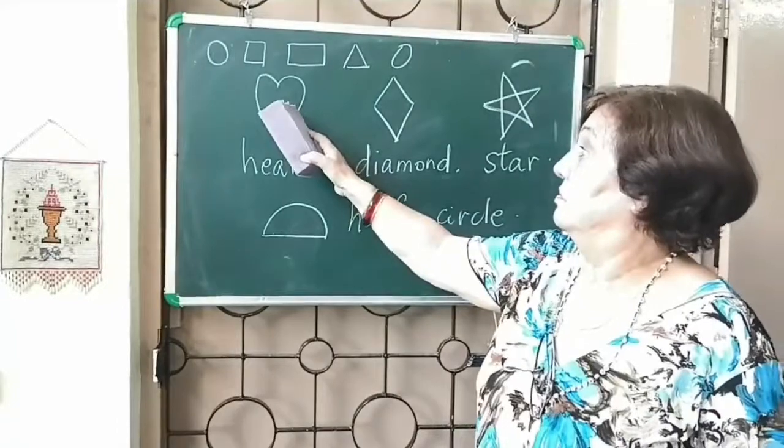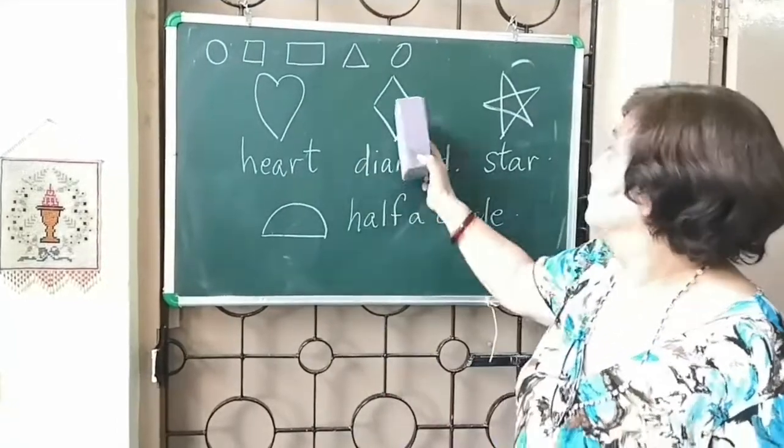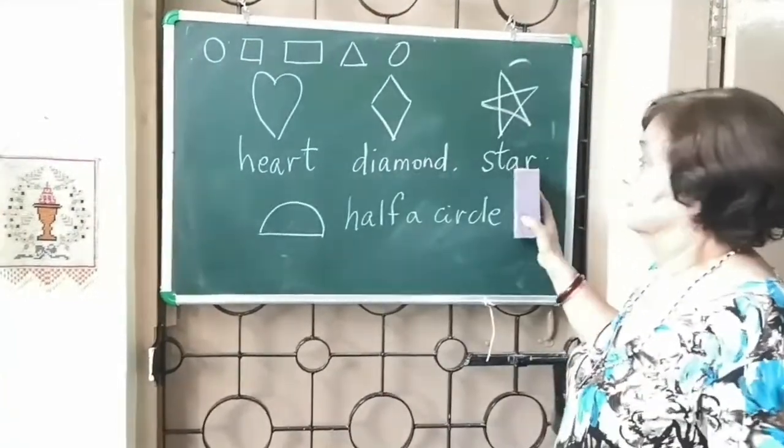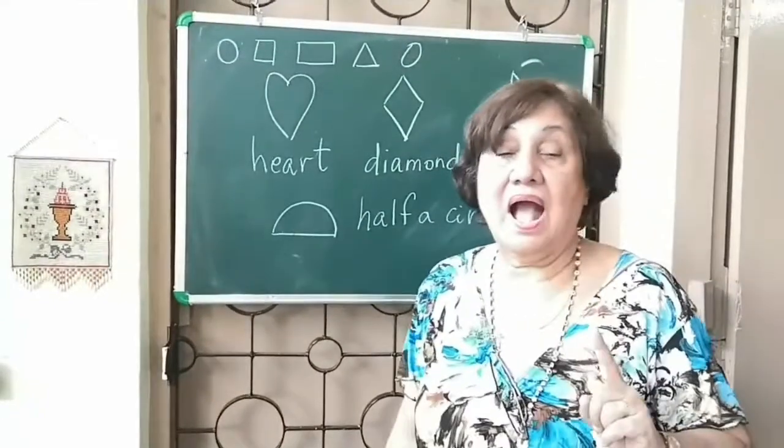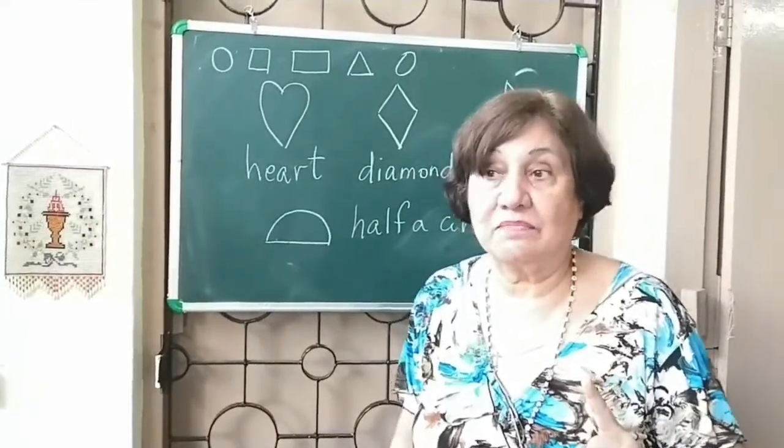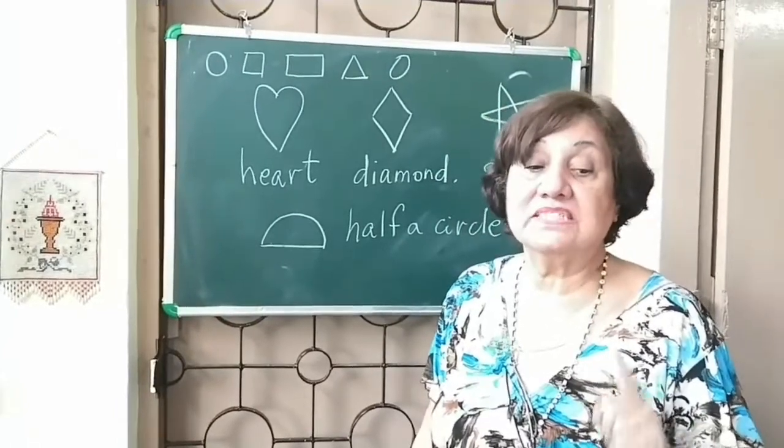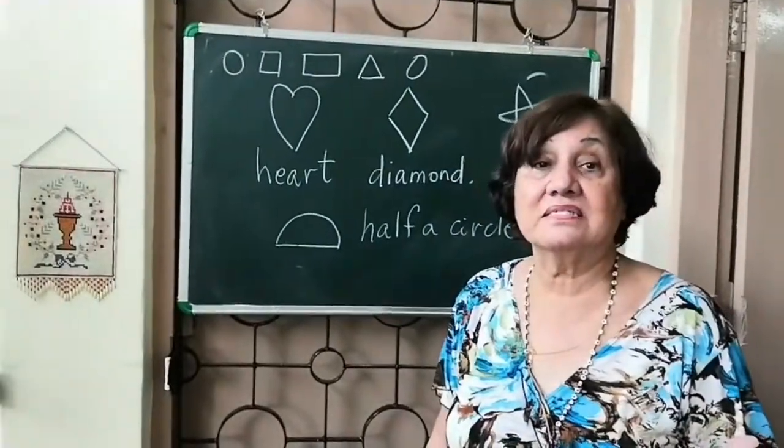And half a circle. Just now, you have seen this heart, diamond, star and half a circle. Now, I am going to draw something. And you are going to count and tell me how many squares.